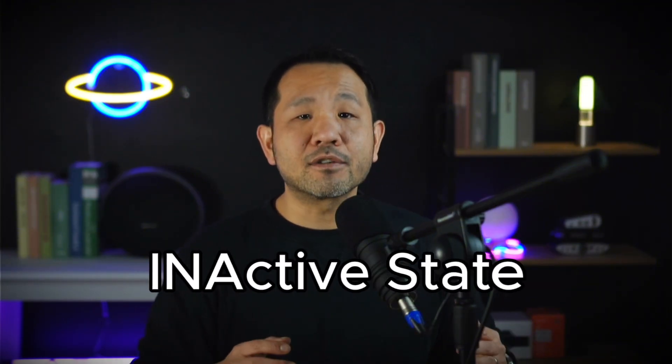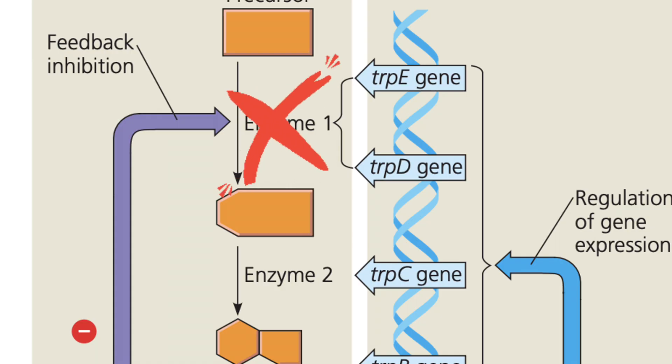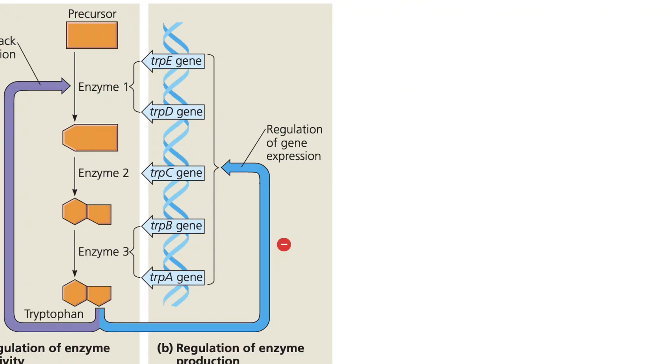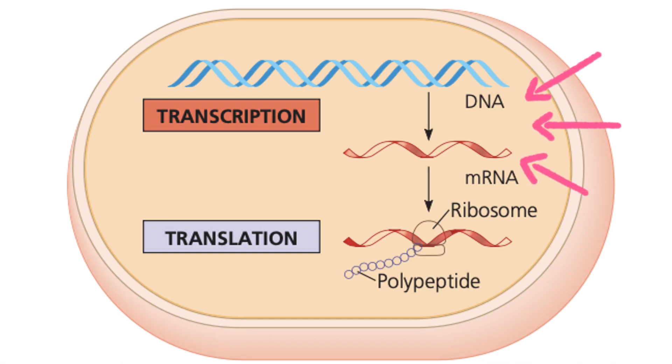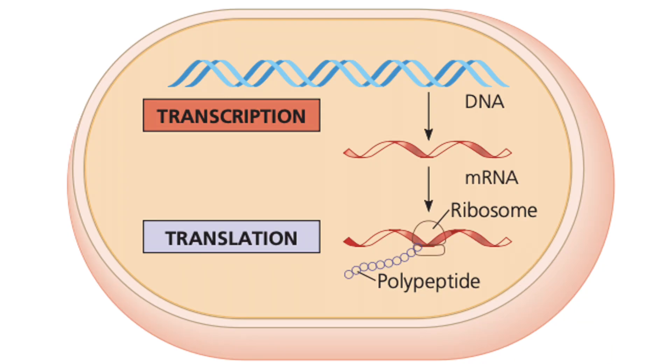This is done by tryptophan binding to an allosteric site of enzyme 1, thereby altering its active site into an inactive state. This slows down further production of tryptophan until its concentration decreases sufficiently to remove tryptophan from the allosteric site, kicking the entire pathway into starting over again. On the right is what we're going to be talking about today: instead of regulating an enzyme, tryptophan can actually stop the expression of all of the enzymes involved in this pathway. The buildup of tryptophan will decrease transcription of all of these genes such that no messenger RNA would be present to create the resulting enzymes.